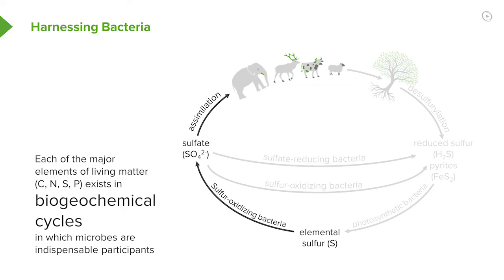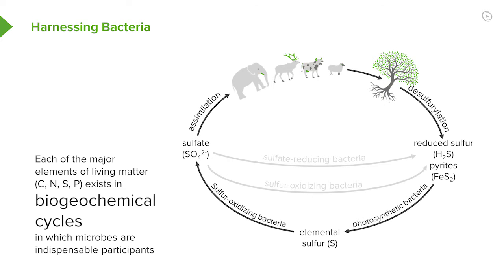Animals and plants take up these sulfates. When these animals and plants die, that sulfur, which has been incorporated into various molecules in the animals and the plants, has to be recovered — it has to be recycled, otherwise we would run out of sulfur. There are bacteria that can do that. They can produce reduced sulfur in the form of hydrogen sulfide or pyrites, which in turn can be used by more bacteria — photosynthetic bacteria — to go back to the beginning of the cycle and make elemental sulfur.